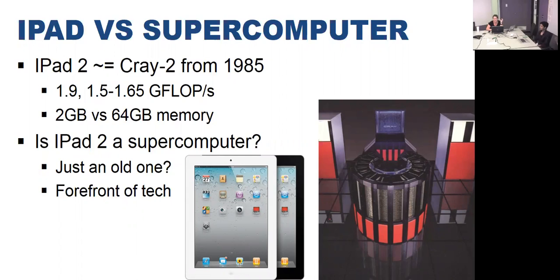We're not just talking about compute power — we're talking about where things are at the bleeding edge. If you look at the iPad 2, it's as powerful as the Cray 2. The Cray 2 was an immensely powerful machine for its age — overwhelming in its flops, and with 2 gigs of memory in 1985, that was really substantial. But we obviously don't talk about an iPad as a supercomputer. It isn't. In terms of scientific computing and the bleeding edge of scientific computing, that's not really what we think about.